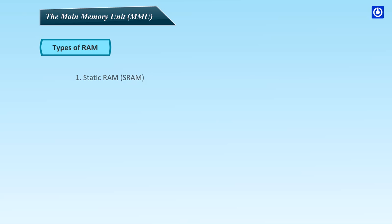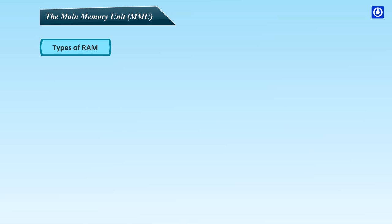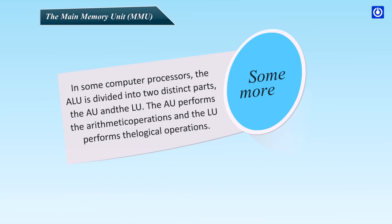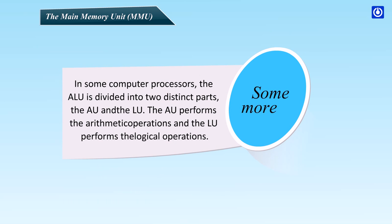Types of RAM: Static RAM (SRAM) and Dynamic RAM (DRAM). You can look inside the CPU tower to see the RAM cards on the motherboard. In some computer processors, the ALU is divided into two distinct parts: the AU, which performs arithmetic operations, and the LU, which performs logical operations.